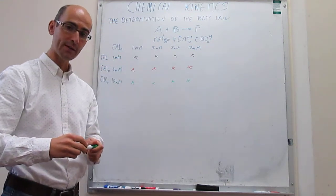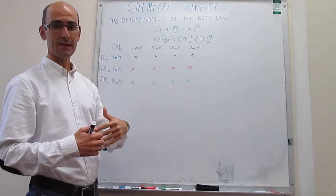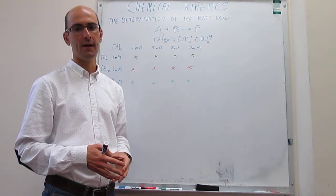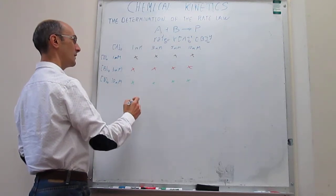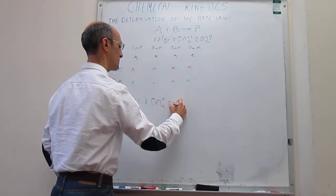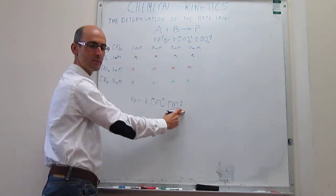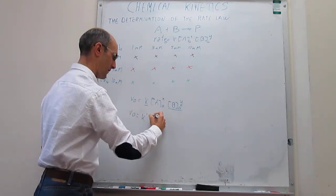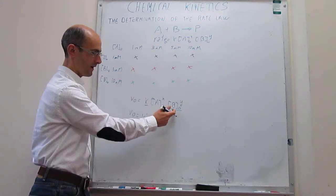The question is how do we obtain the two reaction orders and the rate constant from this grid of experiments? We use the differential method, which consists of taking logarithms of the rate expression to linearize it. For the first set of experiments, the initial rate r₀ equals K times [A]₀^X times [B]₀^Y. Since [B] is constant in this set, we group K and [B]₀^Y together into K prime. So r₀ = K' × [A]₀^X, where K prime equals K times [B]₀^Y.